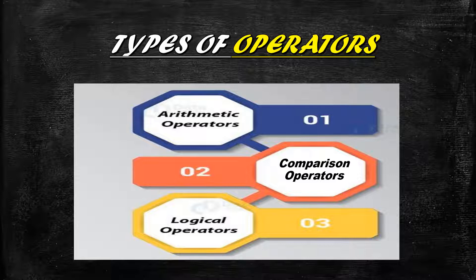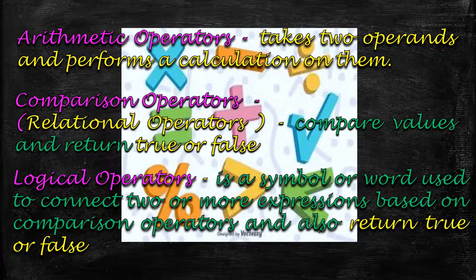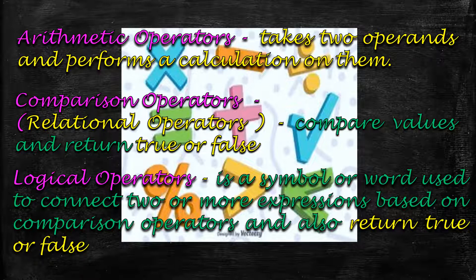There are three types of operators: arithmetic, comparison, and logical. Arithmetic operators take two operands and perform a calculation on them. Comparison operators, also called relational operators, compare values and return either true or false. Logical operators are symbols used to connect two or more expressions based on comparison operators, and they also return true or false.